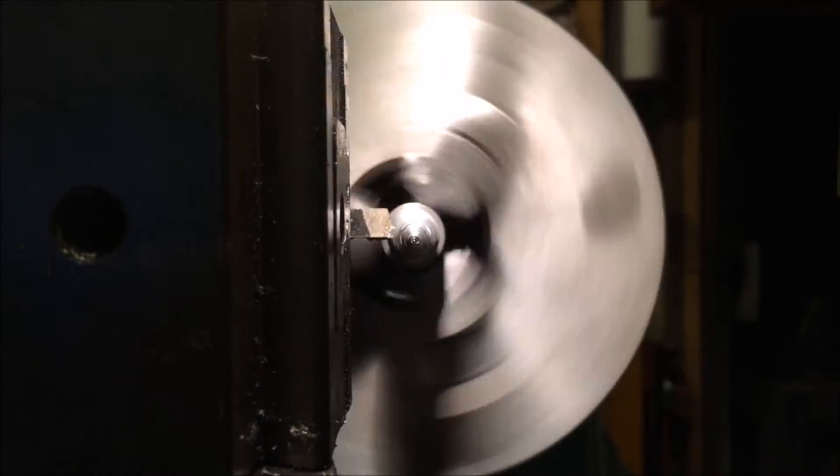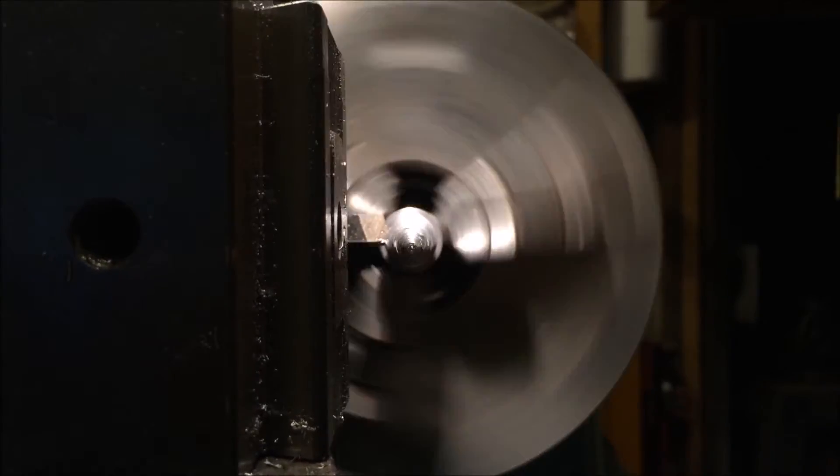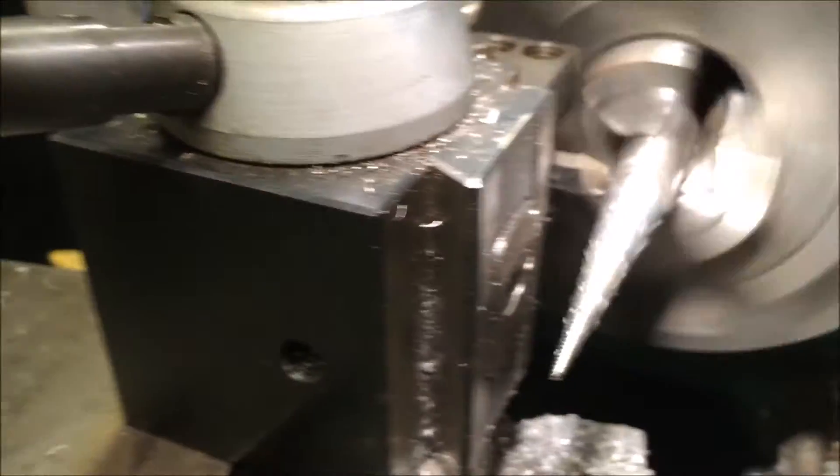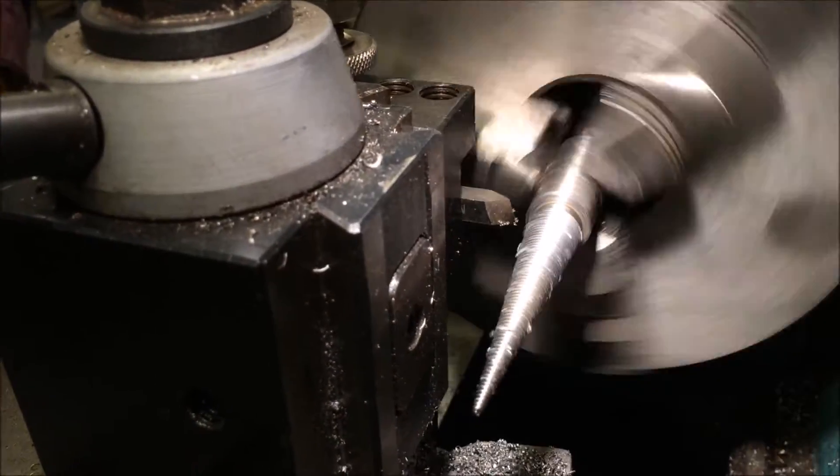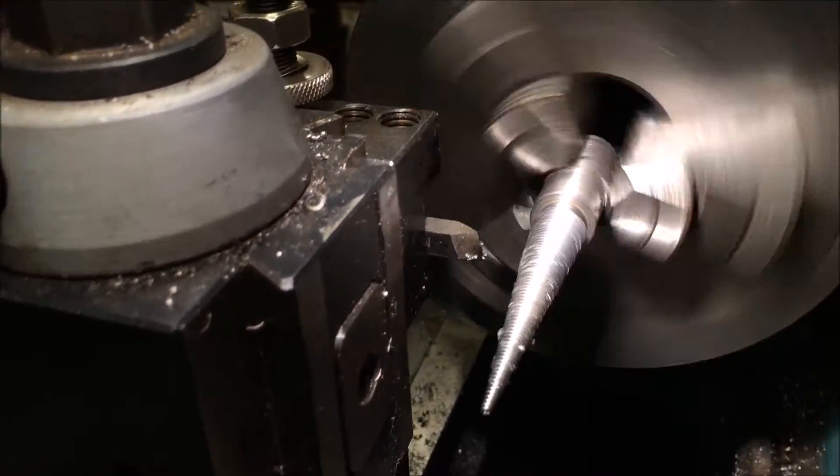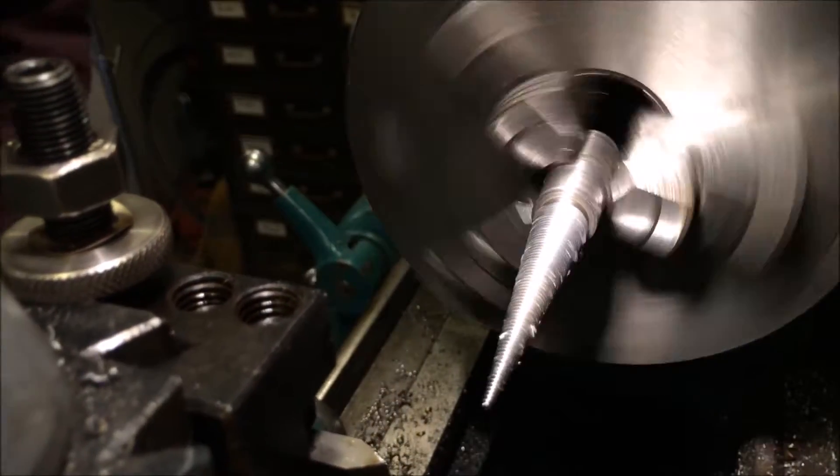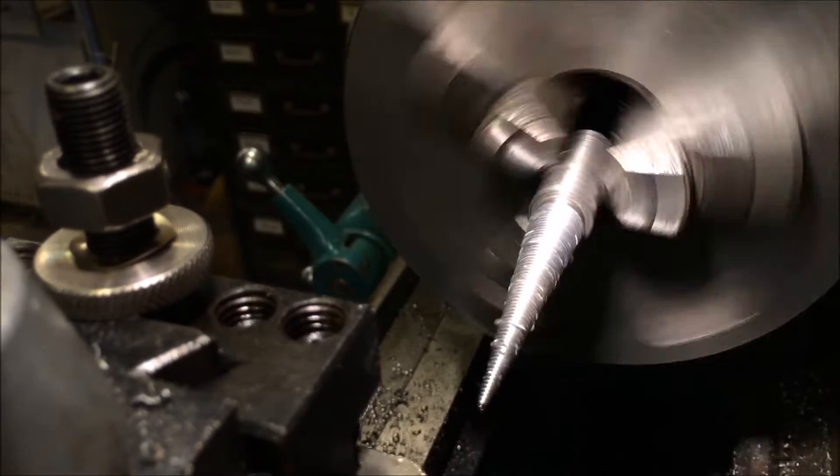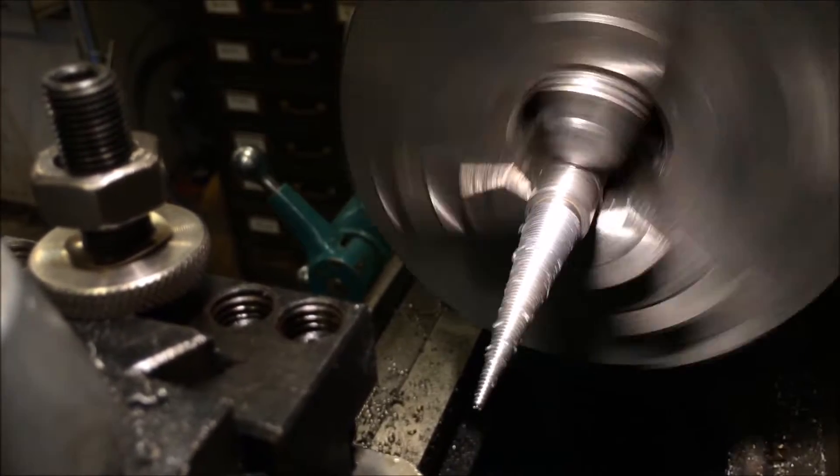This is using the taper attachment on the Monarch, which does a really great job and allowed me to cut this taper. I'm making a jeweler's buffer, I'll show you at the end.